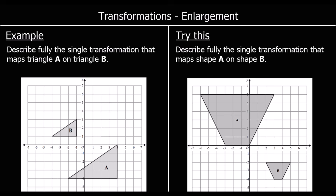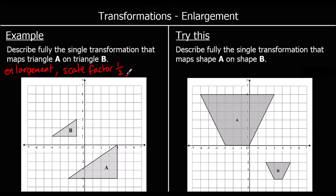Here's a different question: describe fully the transformation that maps A onto B. We can see it's got smaller — A has got smaller to get to B — but it's still an enlargement. So it can get bigger or smaller with an enlargement. What's the scale factor? If A was four up and B is two up, A was six across and B is three across, the scale factor is a half or 0.5. And the center of enlargement — again, if we join up the points, we should see where they all meet.